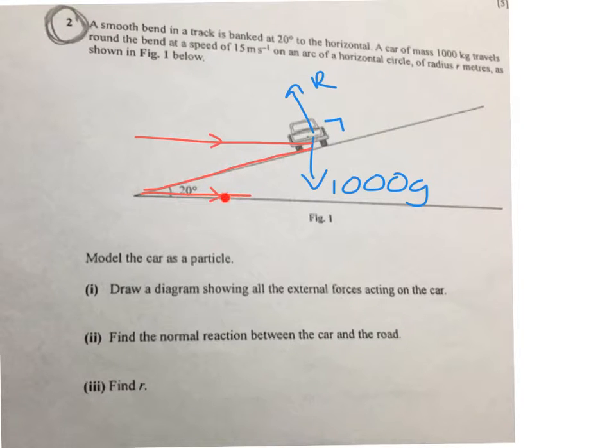So I'm saying this is horizontal and this is horizontal. Then I have an angle in here of 20 degrees, and that's using alternate angles.